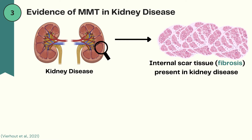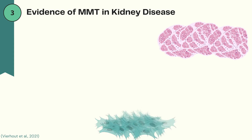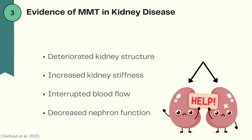There are a number of studies that seem to support MMT in kidney disease. A common cause of end-stage kidney disease is fibrosis. Kidney fibrosis is characterized by a significant accumulation of myofibroblasts inside the kidney. The excess amount of scar tissue that the myofibroblasts create leads to a deteriorated structure of the kidney, as well as increasing stiffness, interrupting blood flow, and decreasing nephron function, which are essential structures in the kidney.